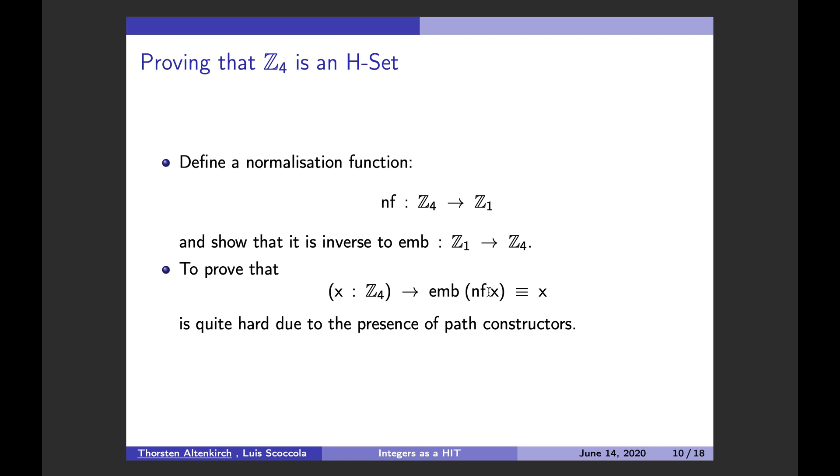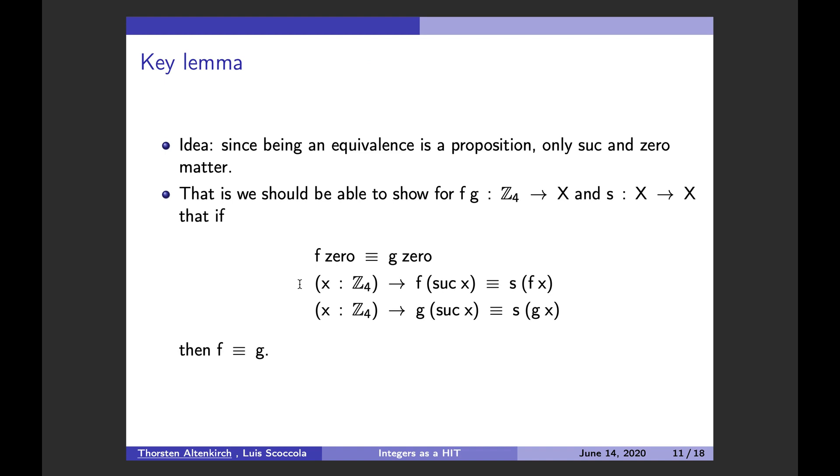And I have an inverse, I have an embedding for my normal forms into these integers I've just defined. This is quite easy to define, and what I need to show is that these two are inverse, so that they're isomorphic to the integers. My z4 is isomorphic to z1. To prove that in particular, I have to prove this lemma here, that m of nf of x equals 2x. And this one is actually a bit tricky, because I have to do some induction over the integers with these complicated path equalities. And it turns out that this is quite hard, because we really have to have these path constructors, so all these constructions take place in higher dimensions.